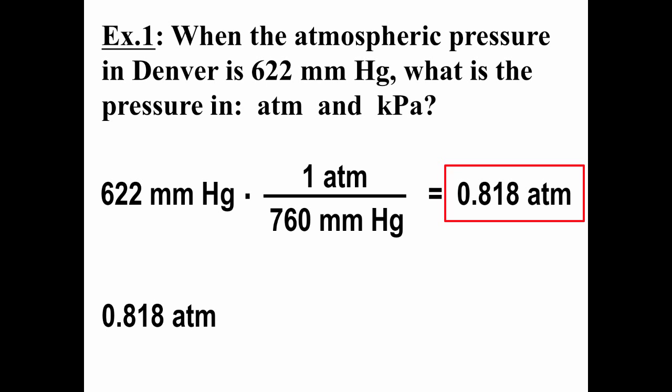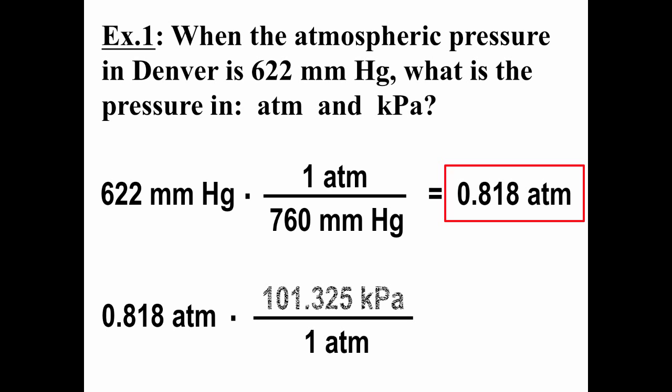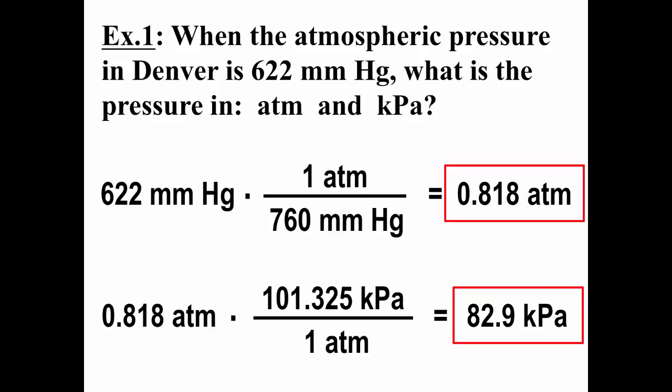If we do the conversion to kilopascals, starting with atmospheres is more straightforward. There are 101,325 pascals in an atmosphere, so that's 101.325 kilopascals per atmosphere. Doing that conversion gives us 82.9 kilopascals for the atmospheric pressure in Denver under these conditions.